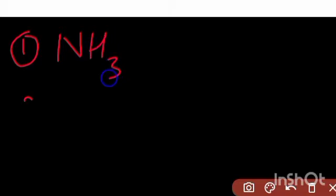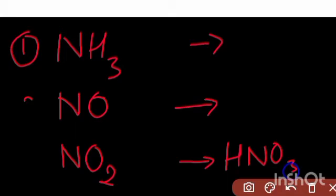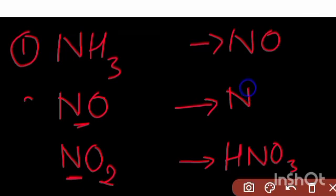To summarize, there are three steps in the preparation of nitric acid. In the first step, the reactant is ammonia (NH₃). In the second step, the reactant is nitric oxide (NO), which is the product of the first step. In the third step, the reactant is nitrogen dioxide (NO₂), which is the product of the second step.